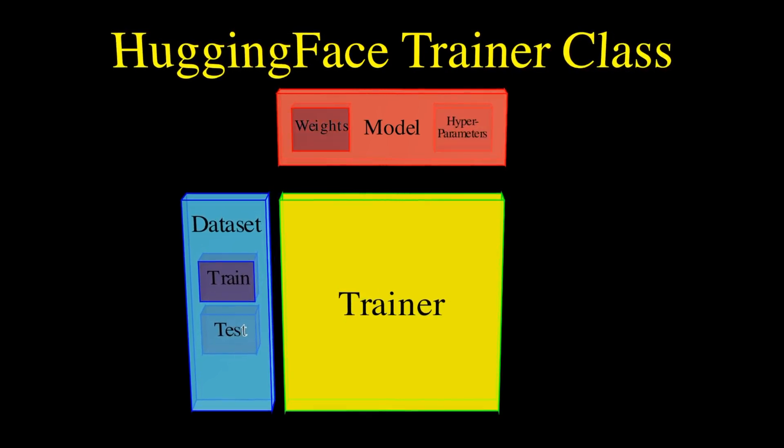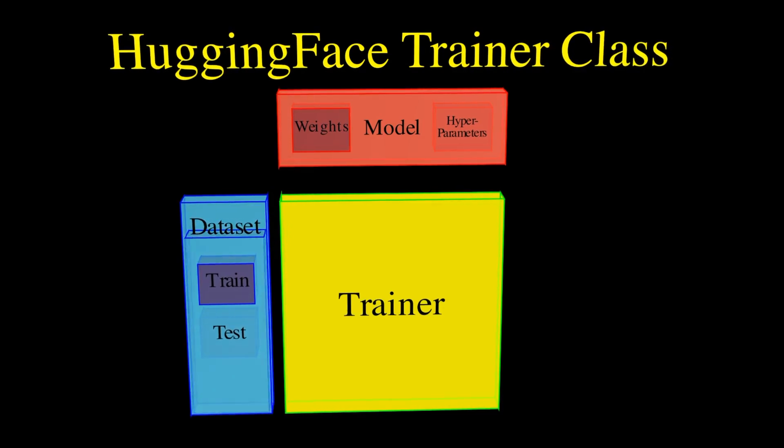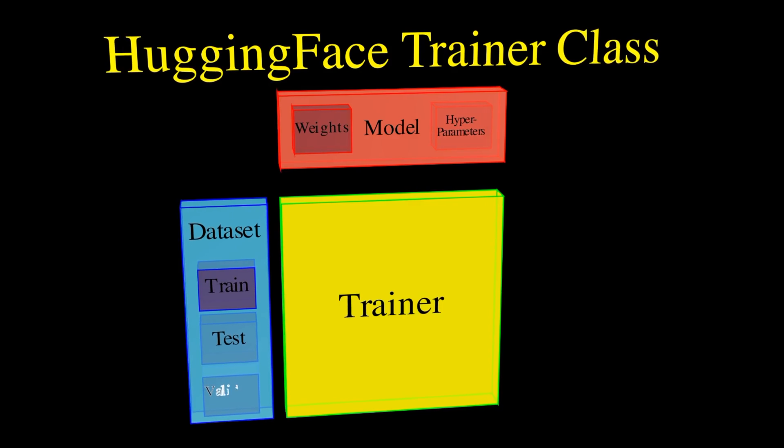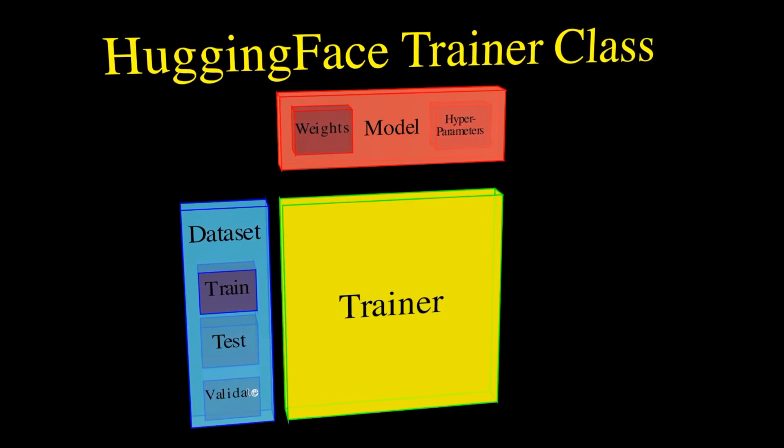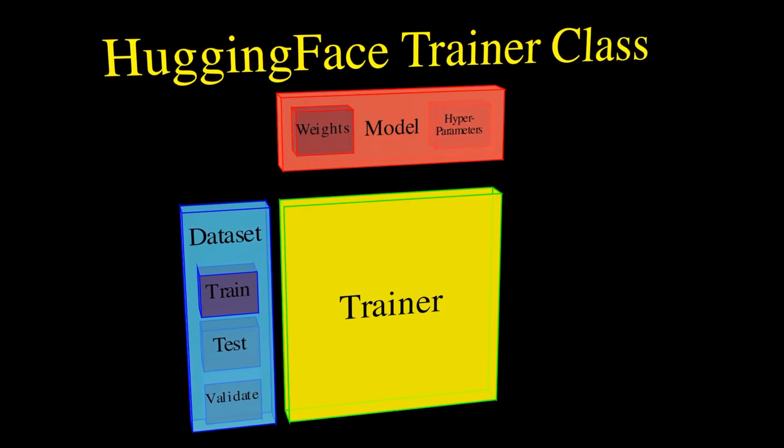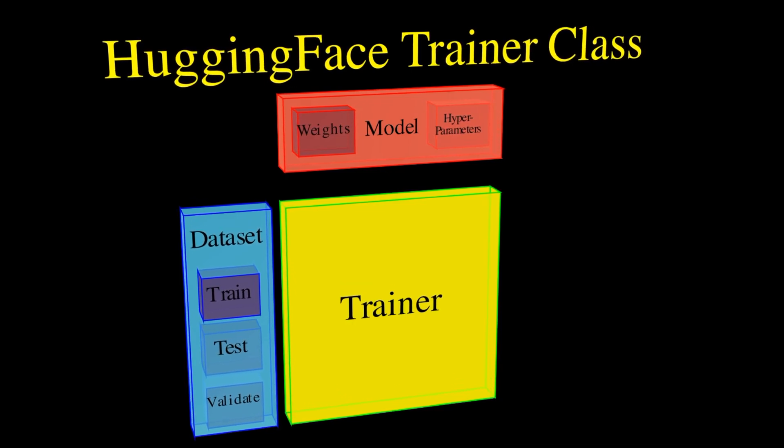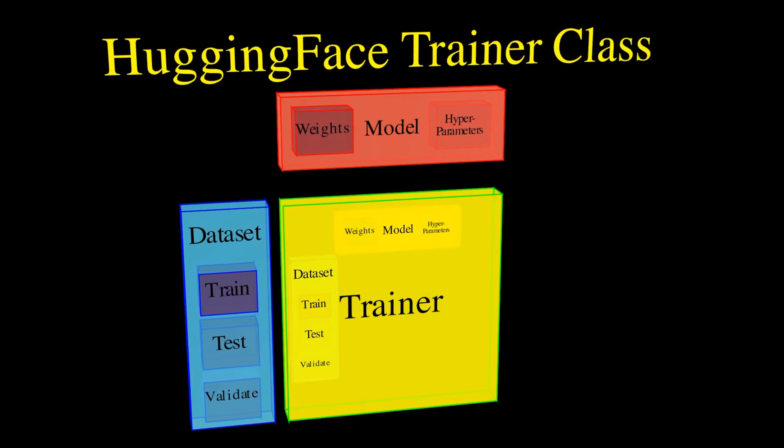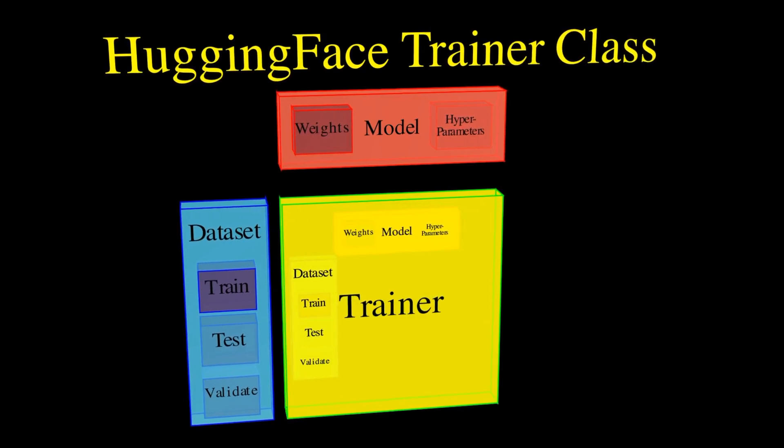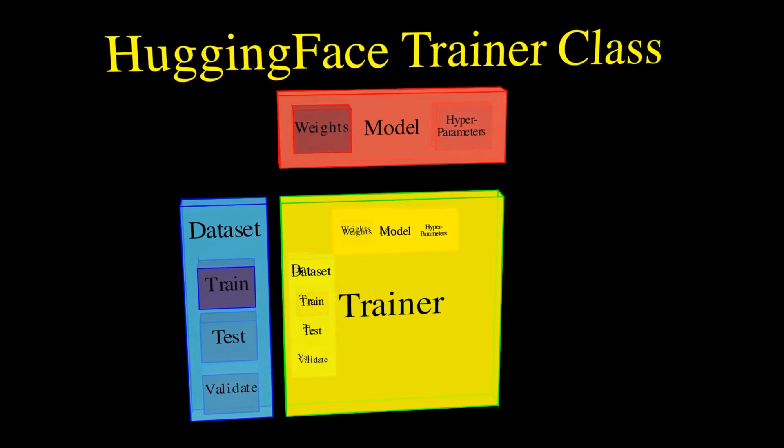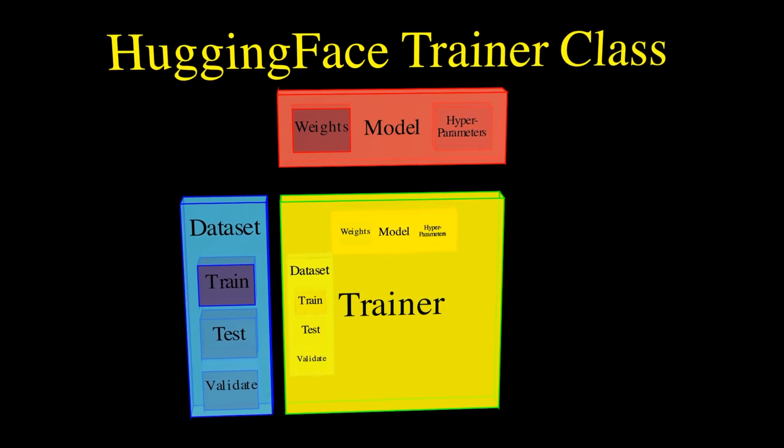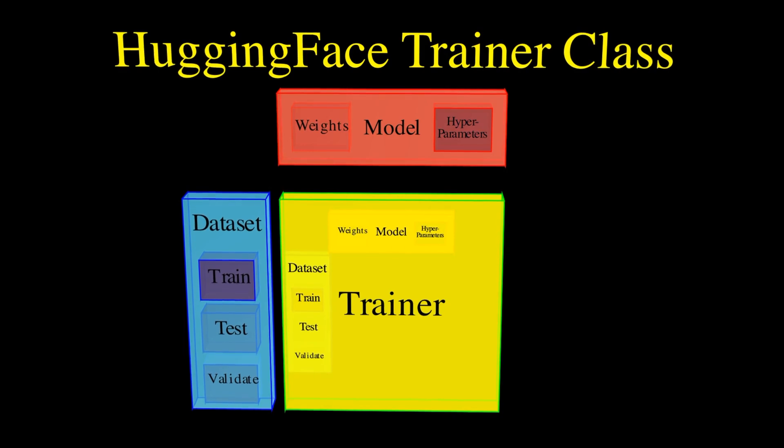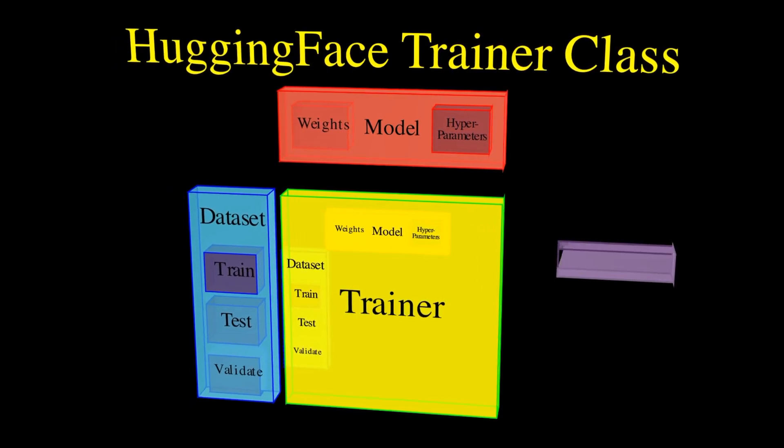Train, test, and validate. The data set is split into these three parts. The model learns from the train set, checks if it's improving using the validate set, and finally tests its newfound skills on the heretofore unseen test set. The trainer guides the LLM through the training data, adjusting the weights and hyperparameters to improve its performance on the task. It's like a coach refining the athlete's technique and strategy based on their performance and practice.